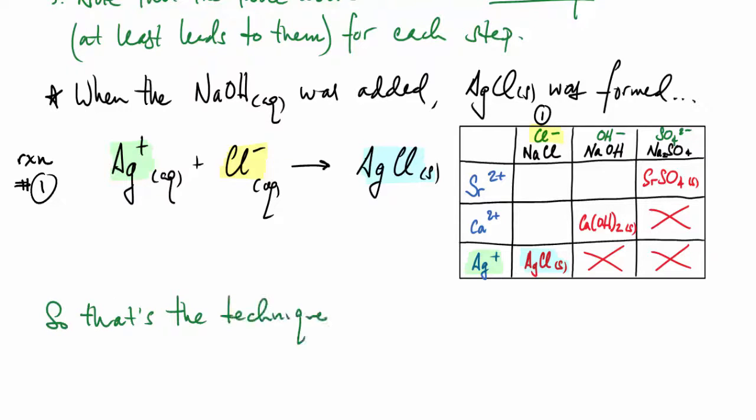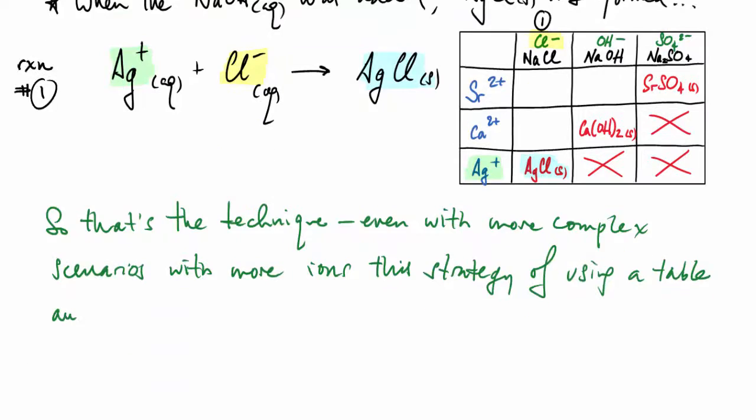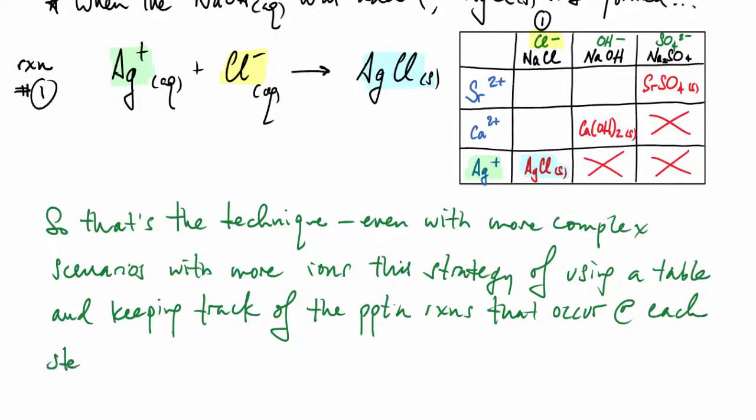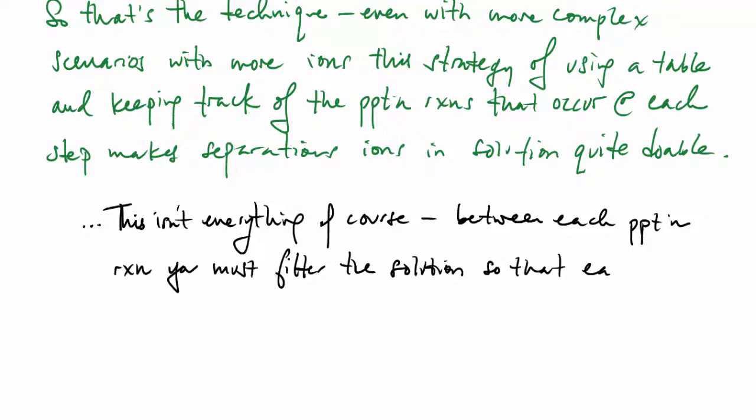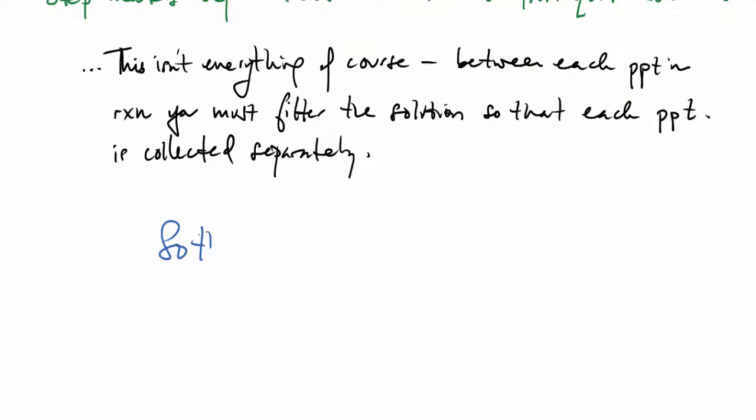That's the technique. Even with more complex scenarios with more ions, this strategy of using a table and keeping track of the precipitation reactions that occur at each step makes separating the ions in solution quite doable. In order to get the ions separated, you do need to, between each precipitation reaction, filter the solution so that each precipitate is collected separately. So: precipitation reaction, filter, and then on to the next one.